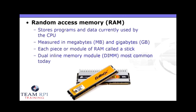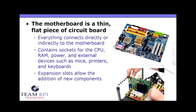Next, we have RAM. The RAM stores programs and data currently used by the CPU. Each piece, or module, of RAM is called a stick. The motherboard itself is nothing more than a thin, flat piece of circuit board — everything else connects directly or indirectly to it. It contains sockets for the CPU, RAM, power, and external devices like mice, printers, and keyboards. You'll also find expansion slots to allow you to add other components later.